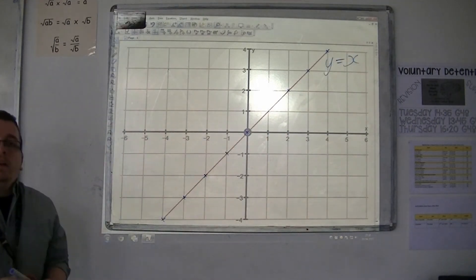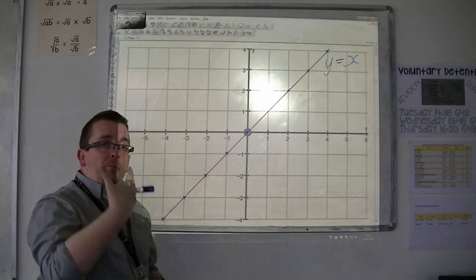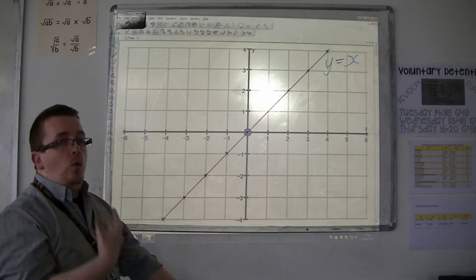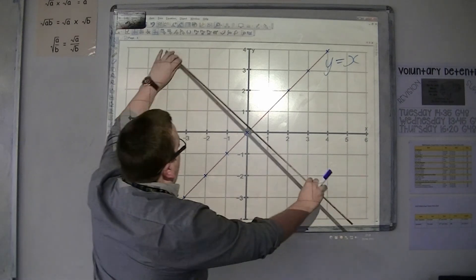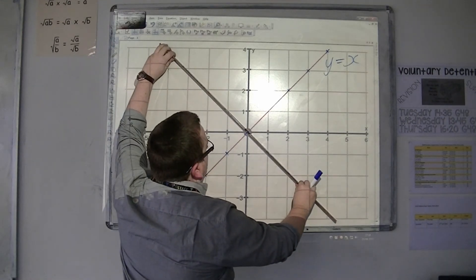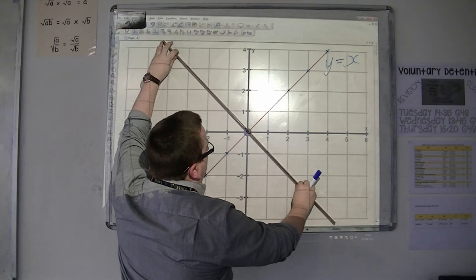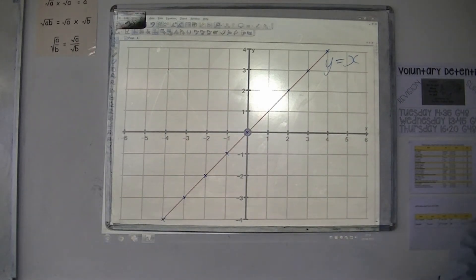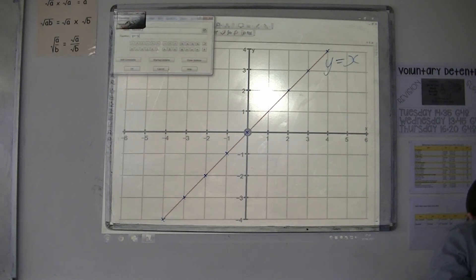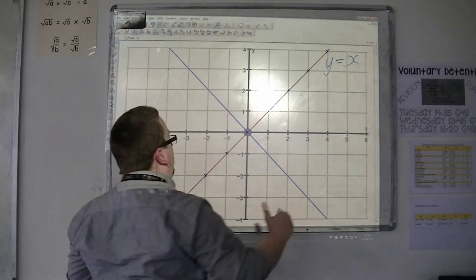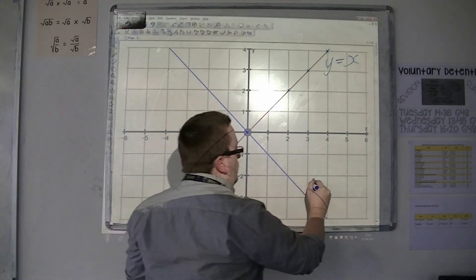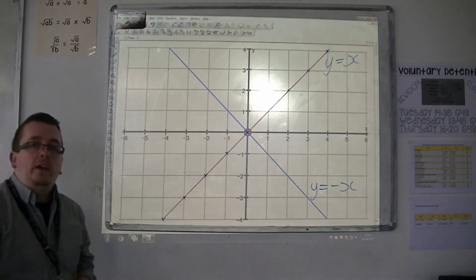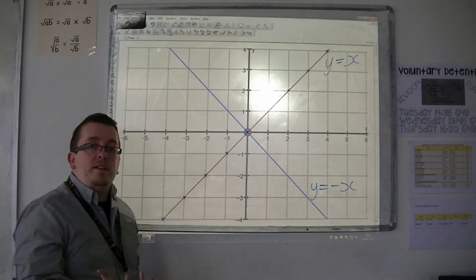The other is known as y equals minus x. So you might expect that if I say it's y equals minus x, then it should be going in the opposite direction. So it would look something like that. So if I draw on y equals minus x, we get this line here. So that's y equals minus x.